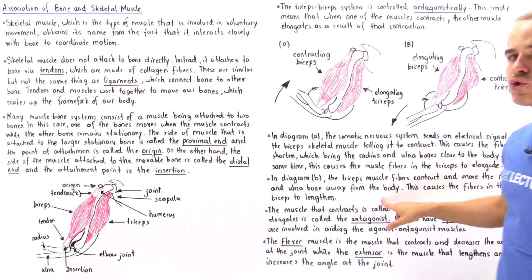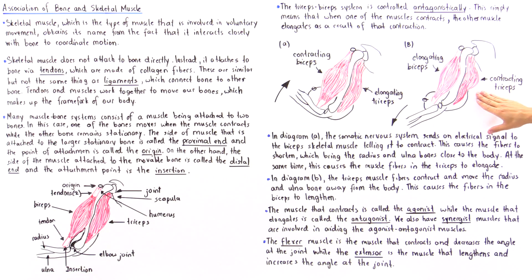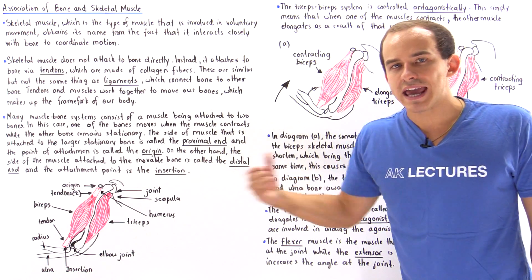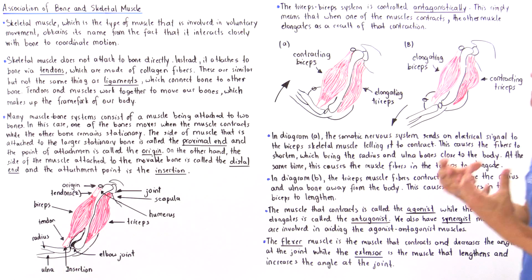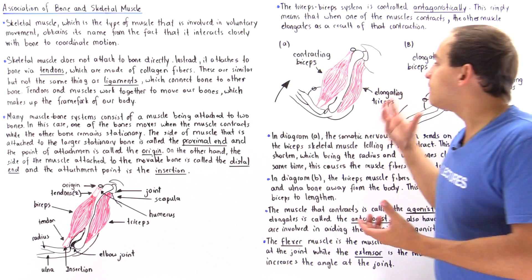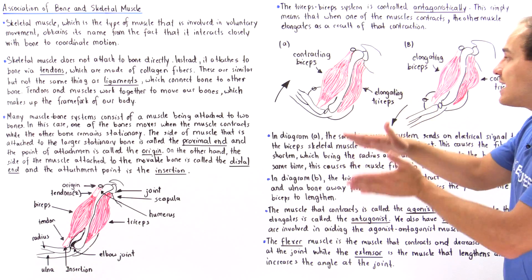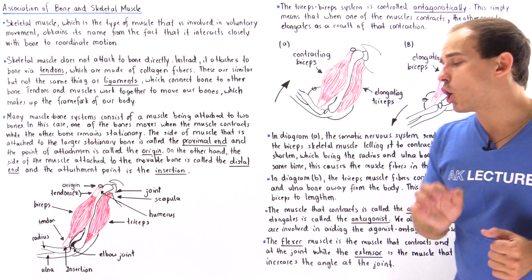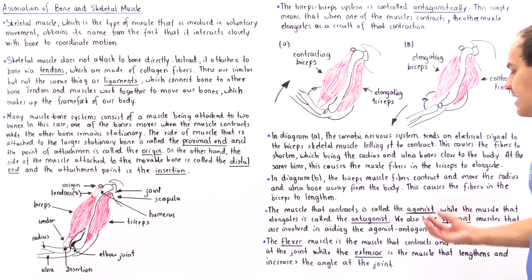The muscle that contracts is known as the agonist — in diagram A it's the bicep, in diagram B it's the tricep. The muscle that elongates is known as the antagonist — in diagram A it's the tricep, in diagram B it's the bicep. We also have many other muscles involved in this motion. These other muscles that help the bicep and tricep are known as our synergist muscles, which aid the agonist and antagonist muscles.